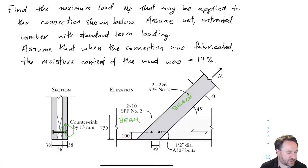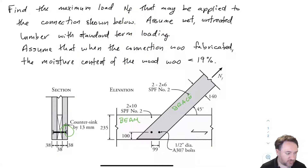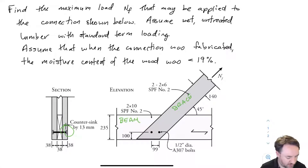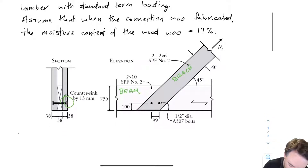Our beam is a 2x10 and our braces are 2x6s, one on either side of the 2x10. The angle is given as 45 degrees, and we have half-inch diameter A307 bolts. The other geometry of the connection is given in terms of where those bolts are located with respect to the brace and the beam. Let's get started. First things first, let's determine all of our modification factors. We already determined that KD equals 1.0.